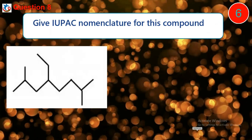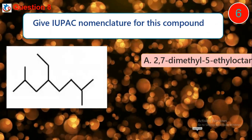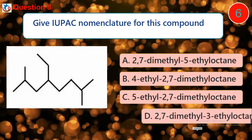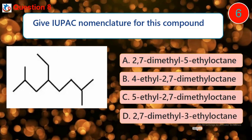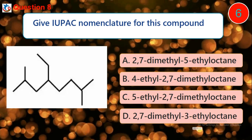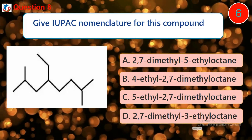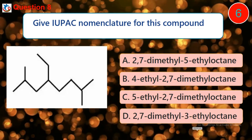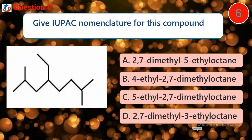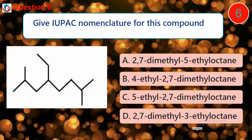Question 8. Give the IUPAC nomenclature for this compound. A. 2,4-dimethyl-5-ethyl-octane. B. 4-ethyl-2,7-dimethyl-octane. C. 5-ethyl-2,7-dimethyl-octane. D. 2,7-dimethyl-3-ethyl-octane.